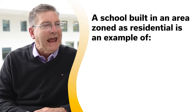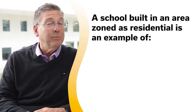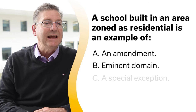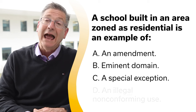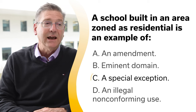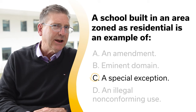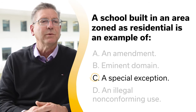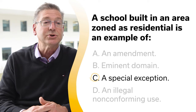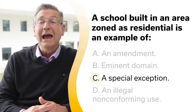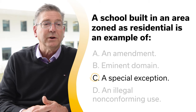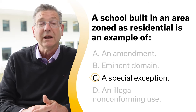A school built in an area zoned as residential is an example of: A, an amendment; B, eminent domain; C, a special exception; or D, an illegal non-conforming use. The correct answer is C, a special exception. A special exception occurs when the use of the property is not consistent with the zoning ordinance for that area, but the use is allowed to continue if it is clearly beneficial or essential to the public welfare and does not materially impair other uses in the same zone. Examples include a school built in a residential zone or a hospital built in an industrial zone.